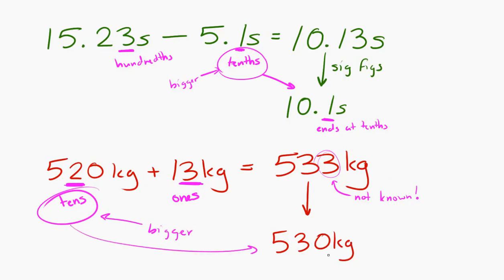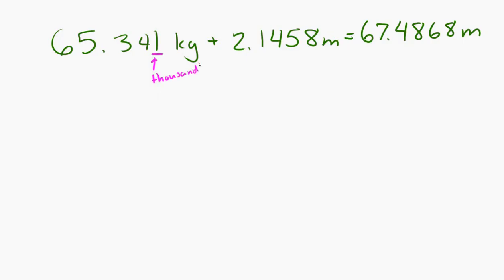Let's do another one. 65.341 meters plus 2.1458 meters. That gives us 67.4868 meters. However, if we look at the least significant decimal place in those two, one has the least significant decimal place in the thousandths, the other has the least significant decimal place in the ten thousandths, and the greater of those is the thousandths. So the answer, we round to the thousandths place. So 67.489 meters.